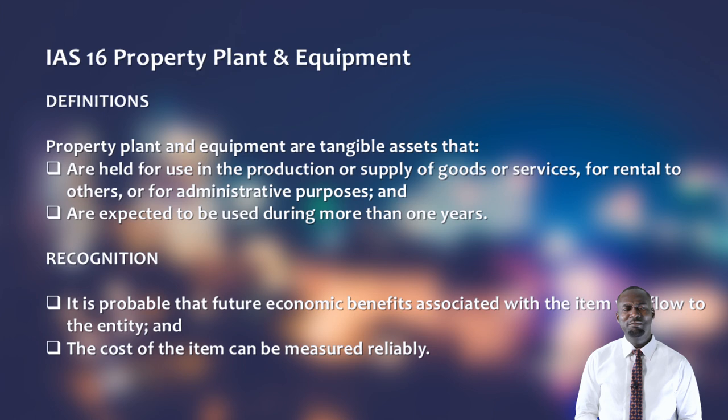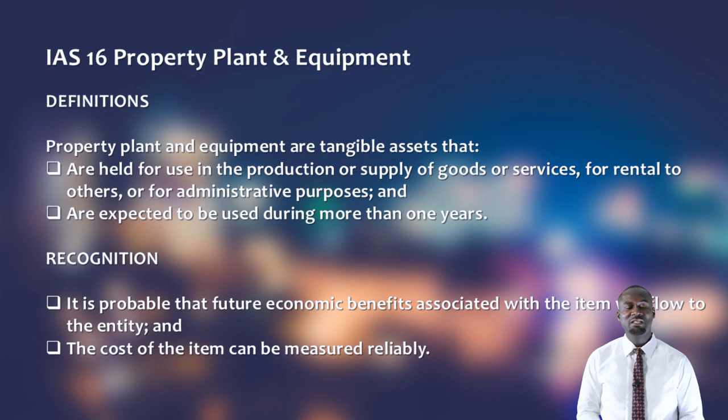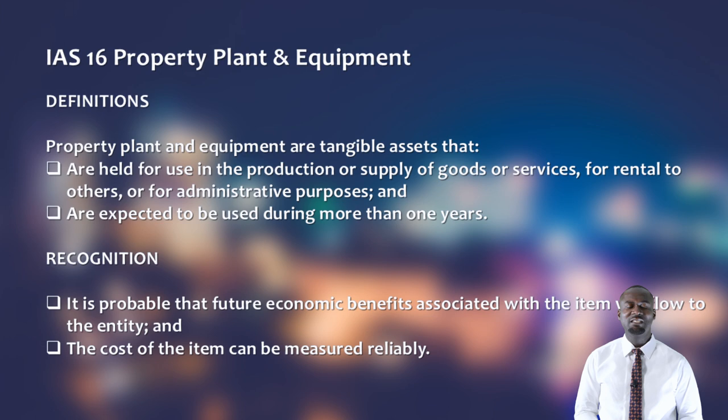What is property, plant, and equipment? According to IAS 16, property, plant, and equipment are tangible assets used for production and supply of goods and services, for rental to others, or for administrative purposes. These are assets which are expected to be used for more than one accounting period. The definition covers both the uses and the duration for which the asset will be held.